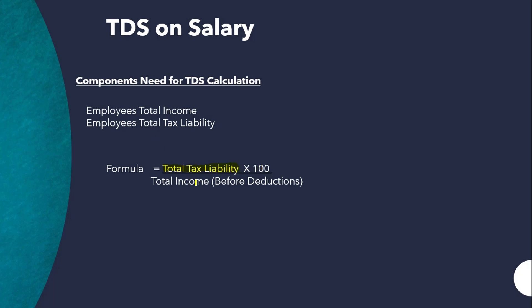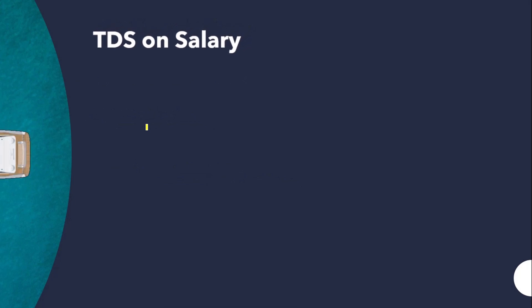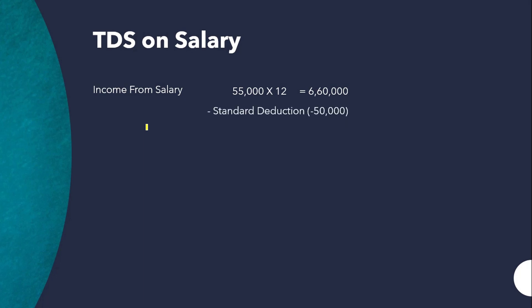Let's take a practical example. The components we need are the employee's total income and total tax liability. There is a person getting income from salary with a monthly income of ₹55,000, so the yearly income will be around ₹6,60,000.